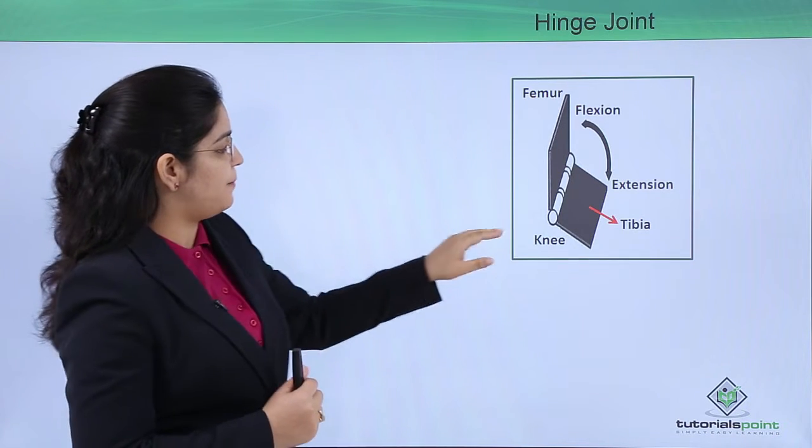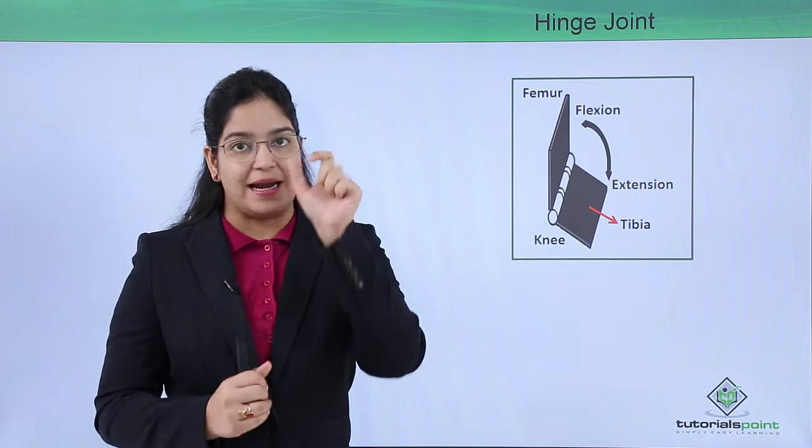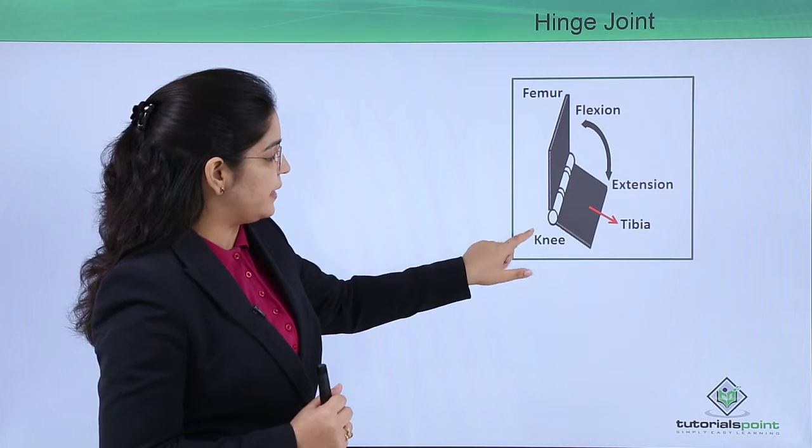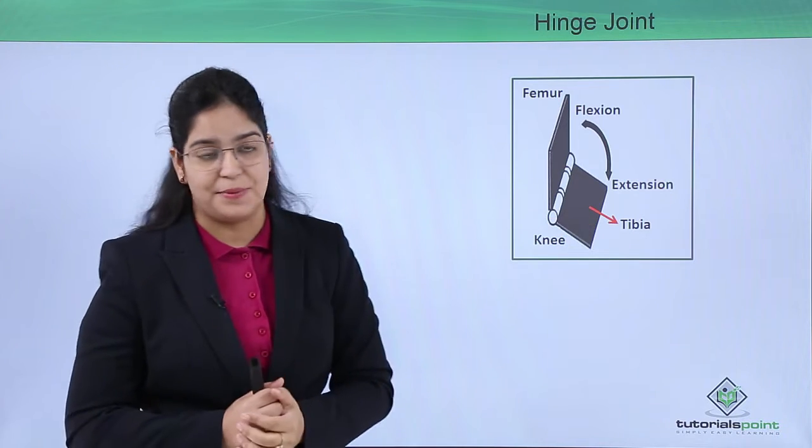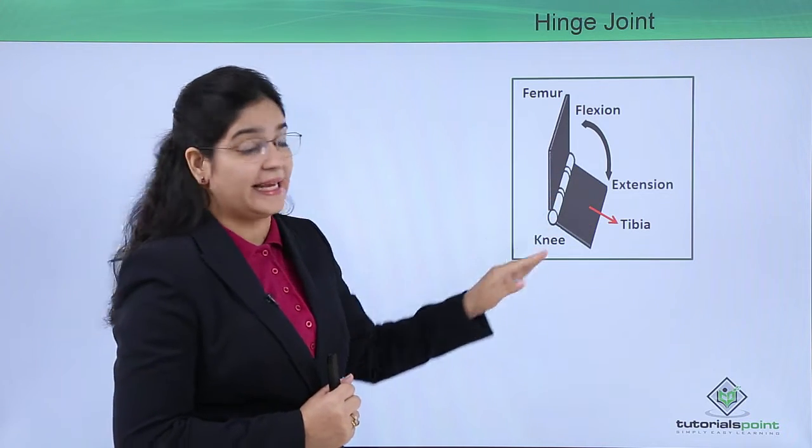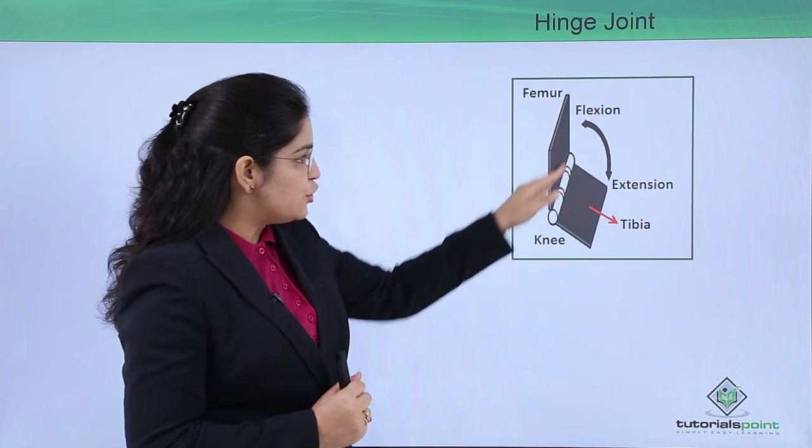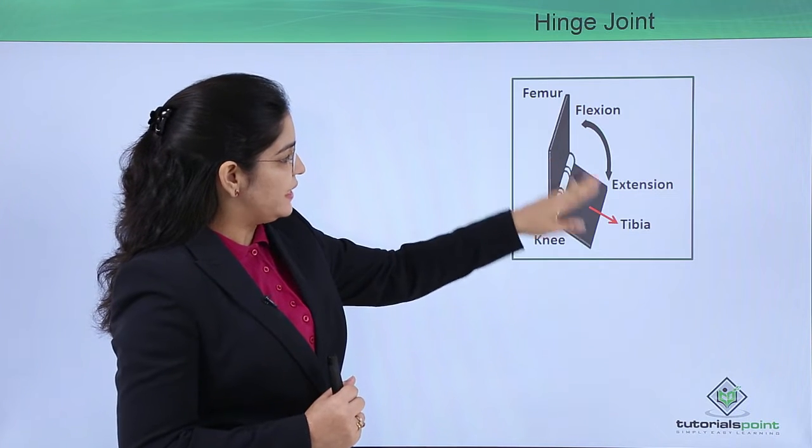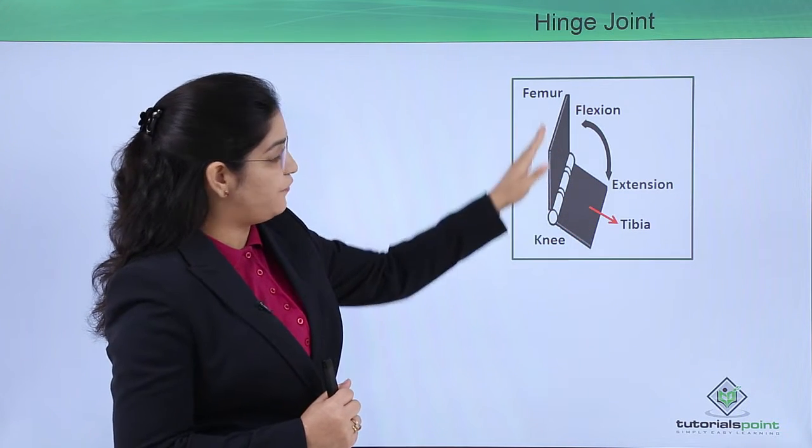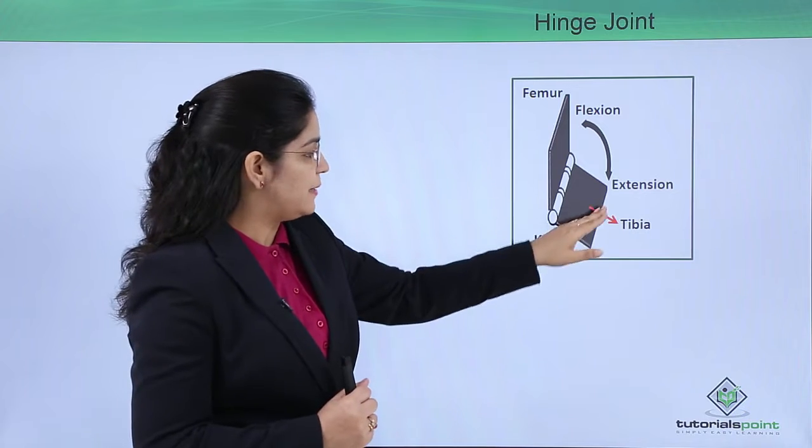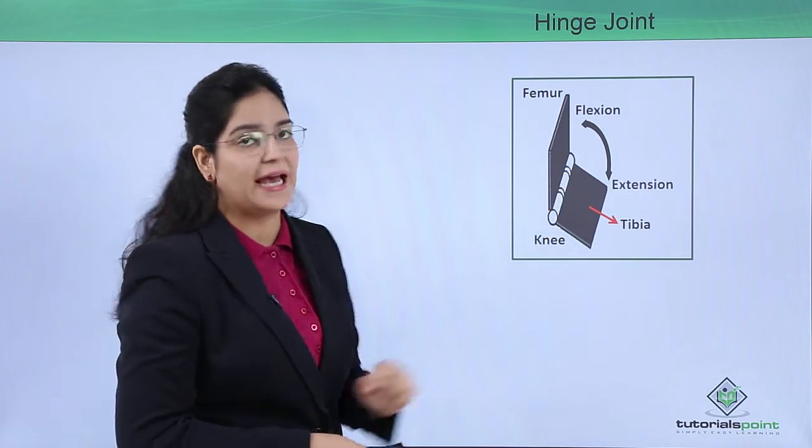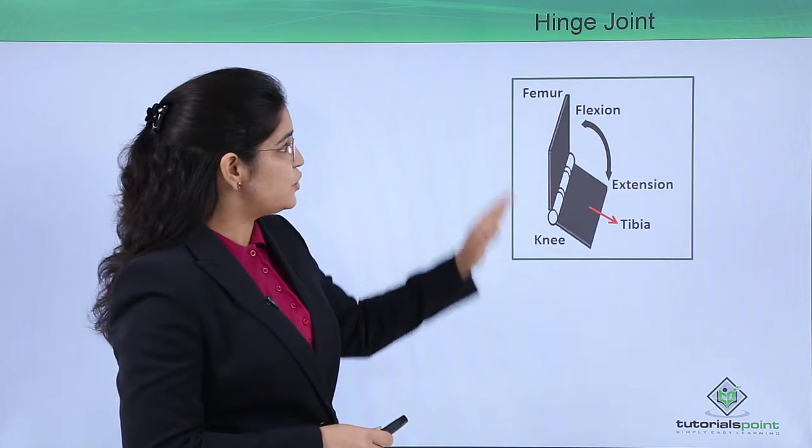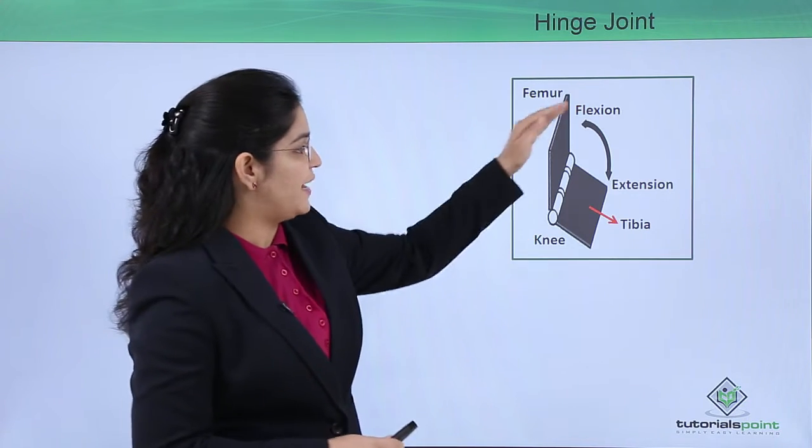For example, we know that our leg contains a knee part. Above the knee, the femur is present, and below it, the tibia is present. This knee contains the hinge joint so that when the femur is stable, the tibia can move up and down all because of this hinge. This shows the movement of flexion and extension.